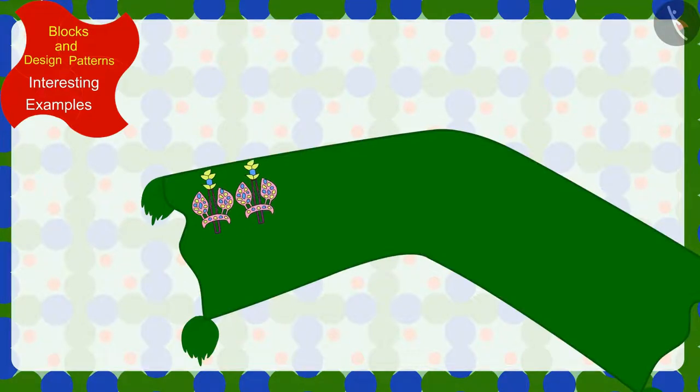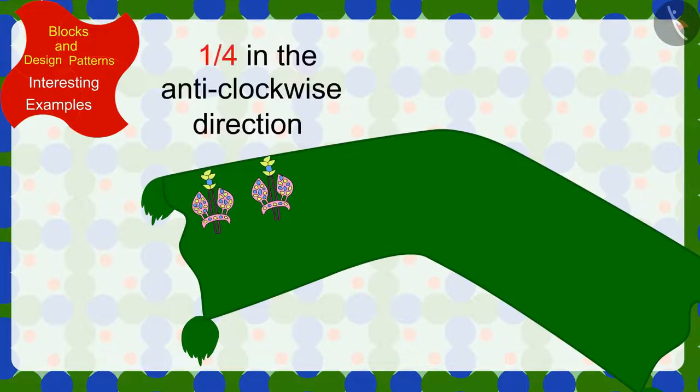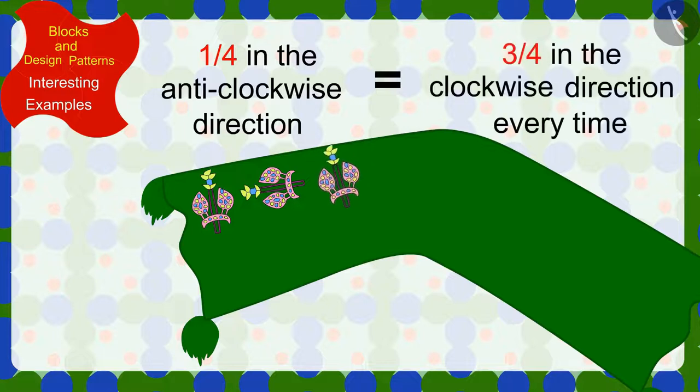And in the pattern made on the dupatta, the design is being rotated by a quarter in the anti-clockwise direction or three-fourths in the clockwise direction every time.